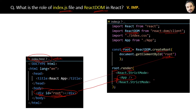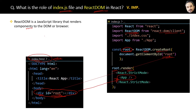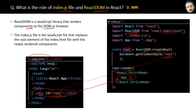The definition of ReactDOM is: ReactDOM is a JavaScript library that renders the component to the DOM. And the definition of the index.js file is: the index.js file is the JavaScript file that replaces the root element of the index.html file with the newly rendered component, with the help of the ReactDOM library.